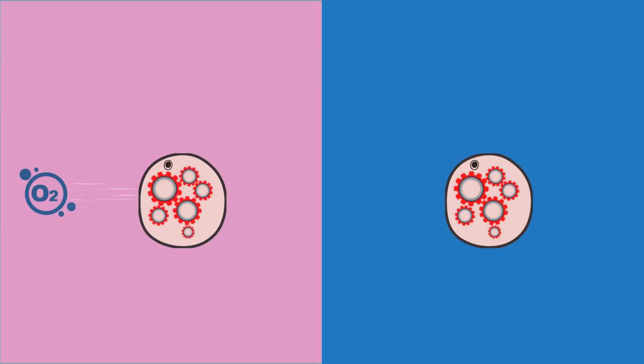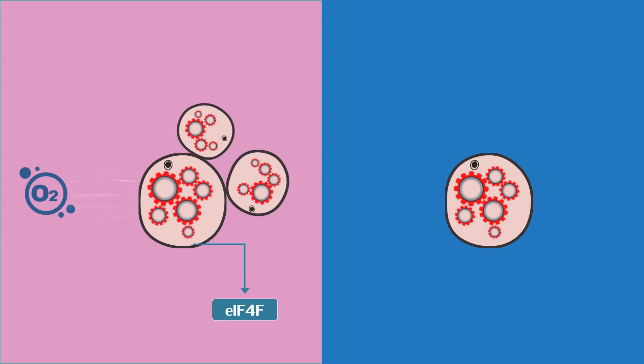When oxygen is abundant, our cells utilize a sophisticated system called EIF4F to drive protein synthesis, which is vital to our health. However, when cells have a lack of oxygen, known as hypoxia, this system shuts down and cells stop creating proteins.